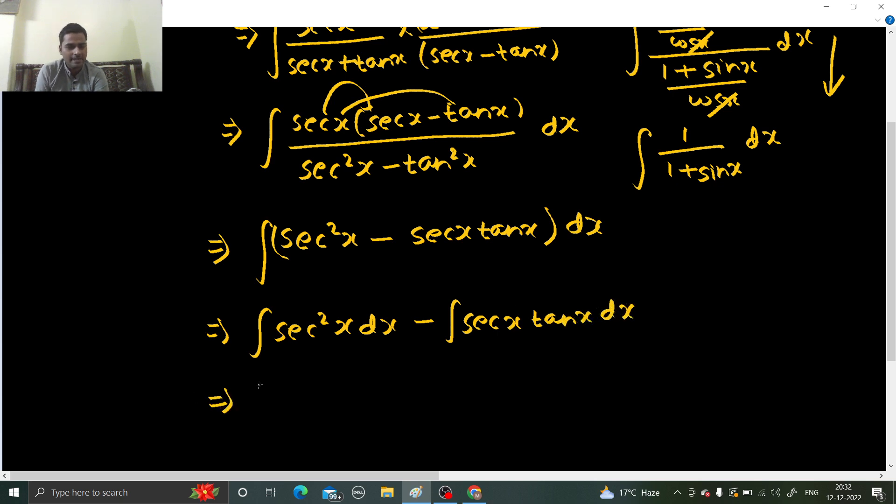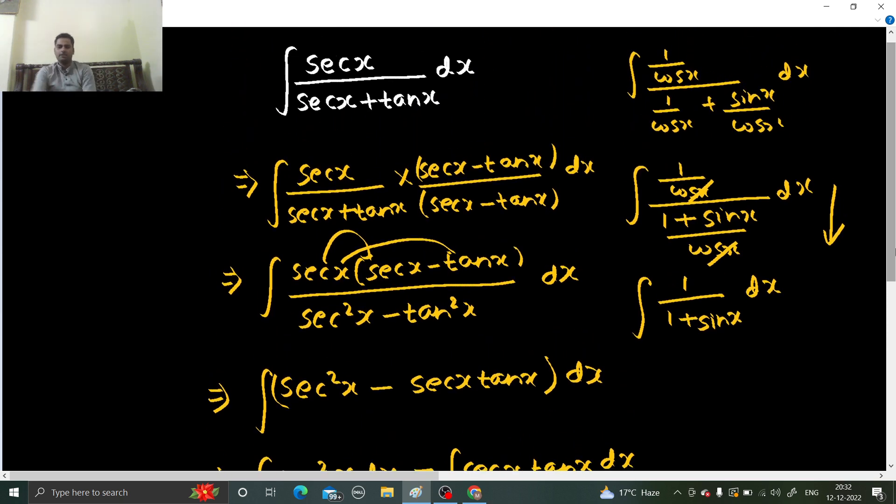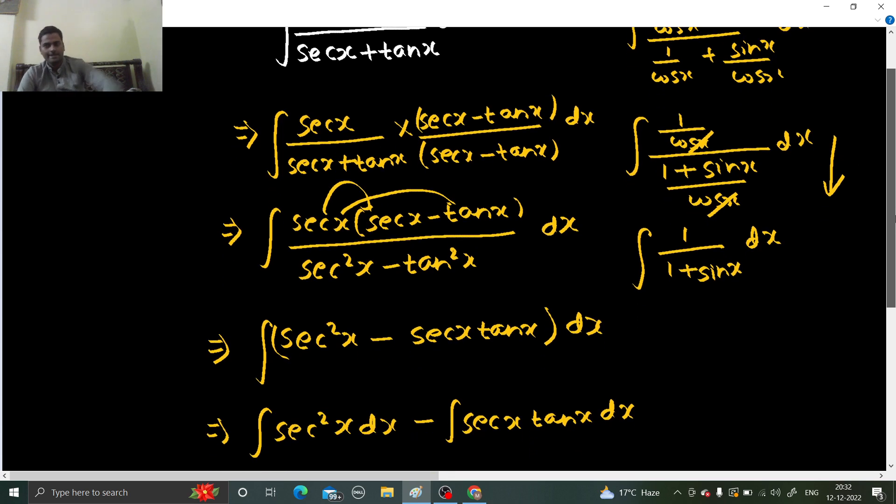So integration of secant square x, you know now. Tan x, integral of secant x tan x, you know secant x. Let's see. This is your answer. So you will have to rationalize in both the methods. But this method looks, both the methods are easier. No problem. But I solved by this method.